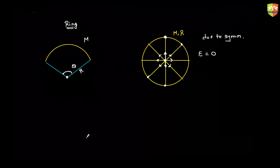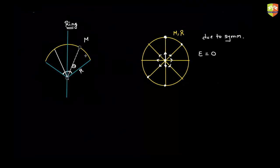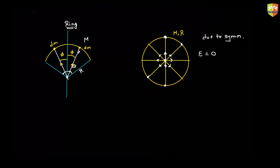Let's see how to do this. First, make full use of symmetry. Divide it into two equal parts, then take a small mass over here and another small mass symmetrically located over there. You will see that the field due to these two will be along the bisector direction. Let's call each small mass dm, and the symmetric angle phi.